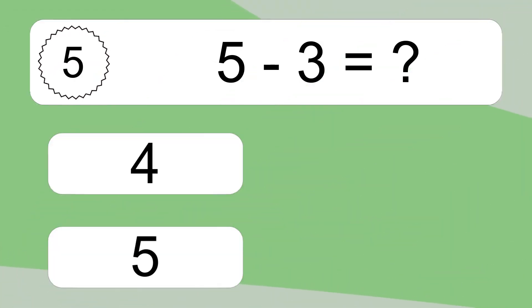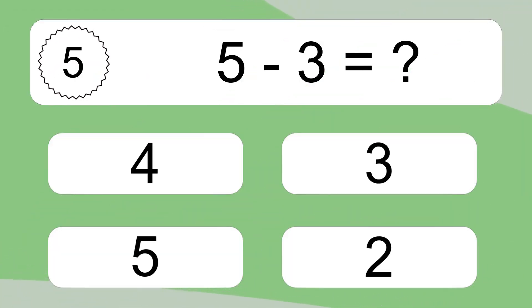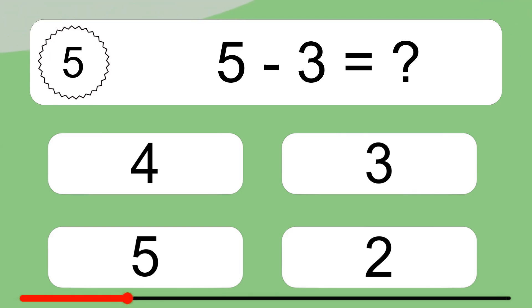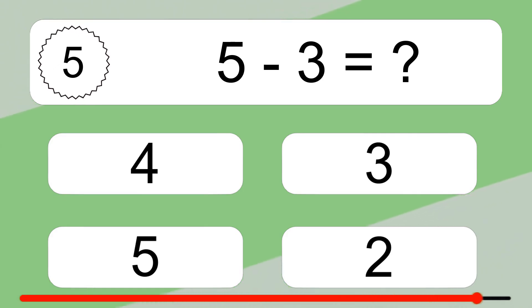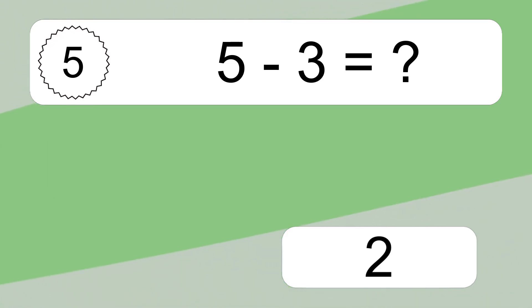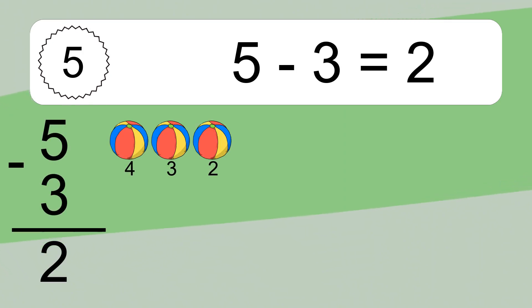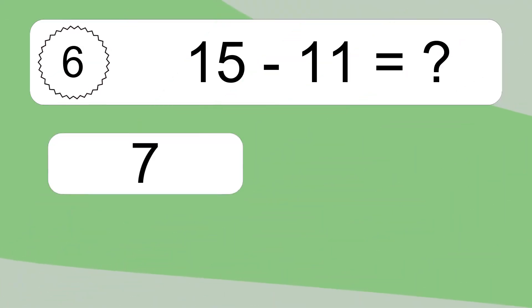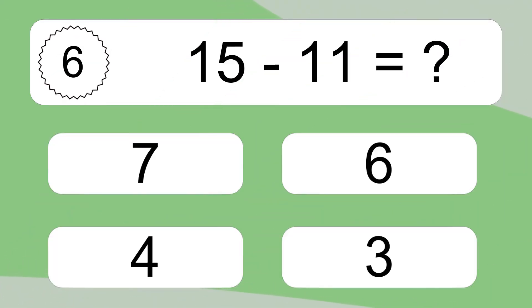5 minus 3 equals what? 5 minus 3 equals 2. Let's count it: 4, 3, 2.